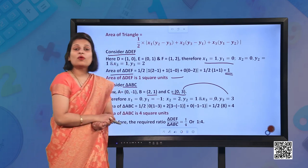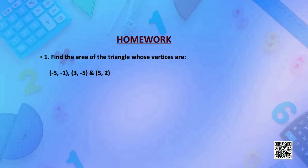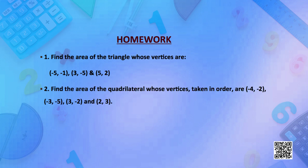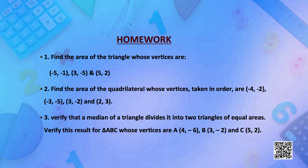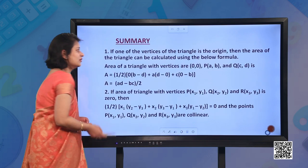Home assignments: First, find the area of the triangle whose vertices are (-5, -1), (3, -5), and (5, 2). Second, find the area of the quadrilateral whose vertices taken in order are (-4, -2), (-3, -5), (3, -2), and (2, 3). Third, verify that a median of a triangle divides it into two triangles of equal areas for triangle ABC with vertices A(4, -6), B(3, -2), and C(5, 2).